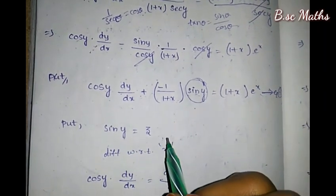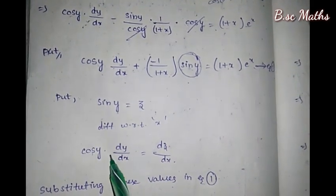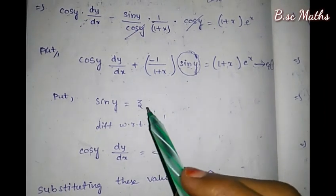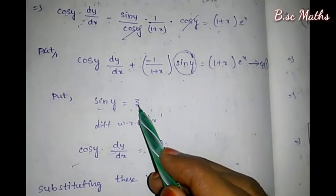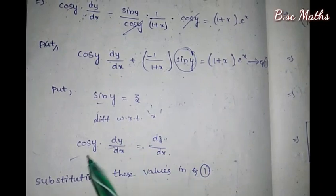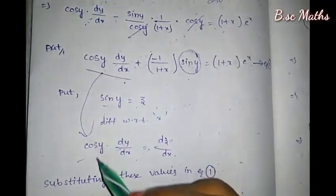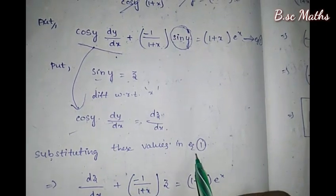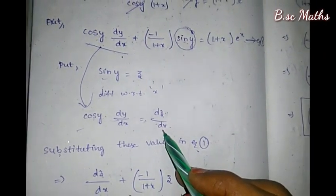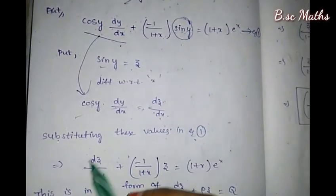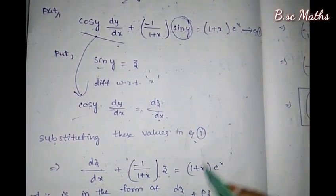Next we use substitution sin(y) equals z. So differentiation with respect to x: d/dx of sin(y) equals cos(y) times dy/dx equals dz/dx. Substituting these values, cos(y) times dy/dx becomes dz/dx, and sin(y) becomes z. So we get dz/dx plus minus 1/(1+x) times z equals (1+x)·e^x.